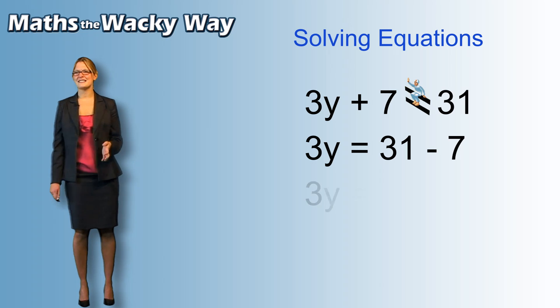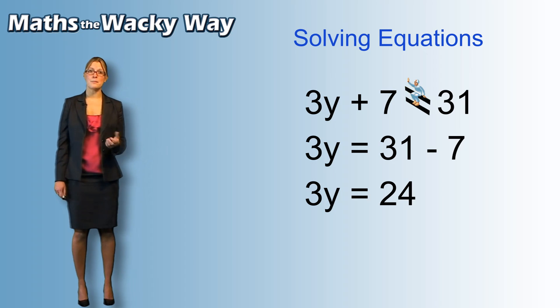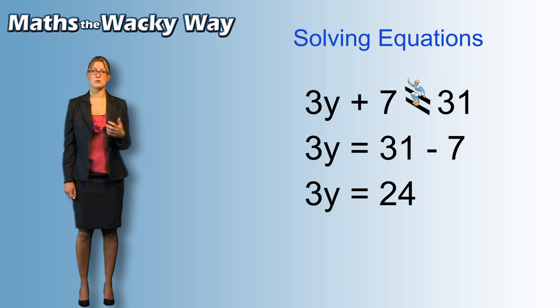Now 31 take away 7, well, we might as well just say that's 24. So I can tidy that up and I can say 3y equals 24.